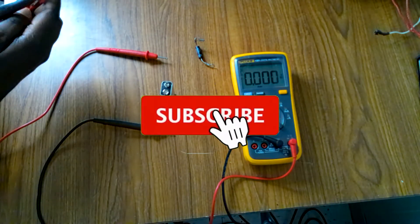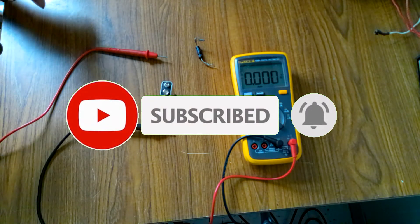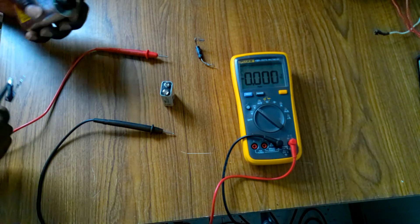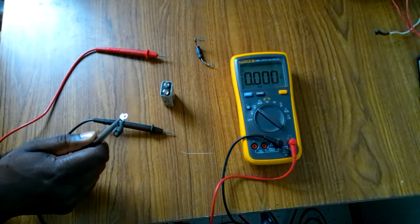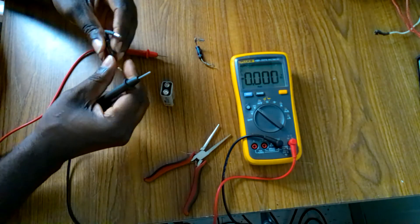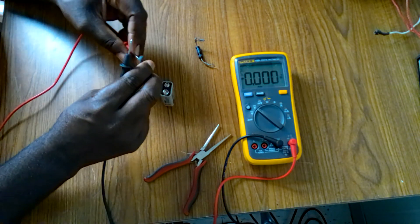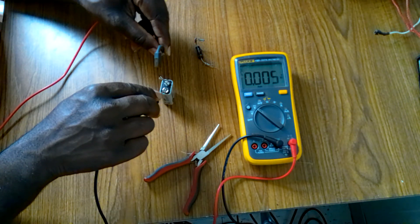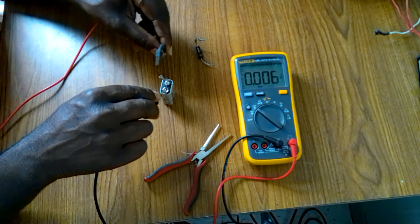I'll show you the next one. This comes from the microwave, they come off with the microwave capacitor. Let me test this one also. No voltage, just 0.006.